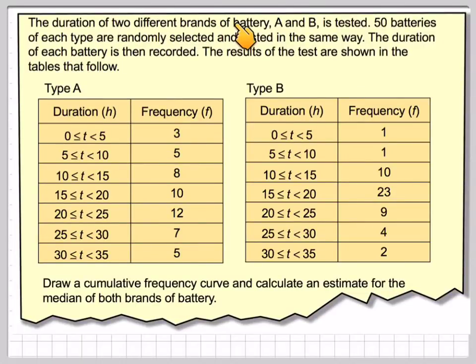The duration of two different brands of battery, A and B, is tested. 50 batteries of each type are randomly selected and tested in the same way. The duration of each battery is then recorded. The results of the test are shown in the tables that follow. Here we have the tables for brand A and for type B. We are asked to draw a cumulative frequency curve and calculate an estimate of the median for both brands of battery.